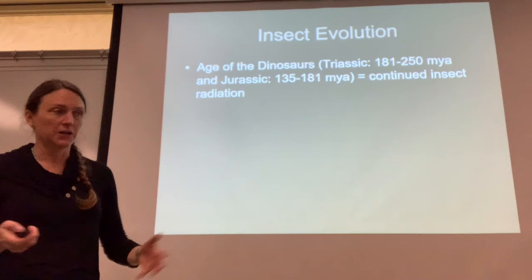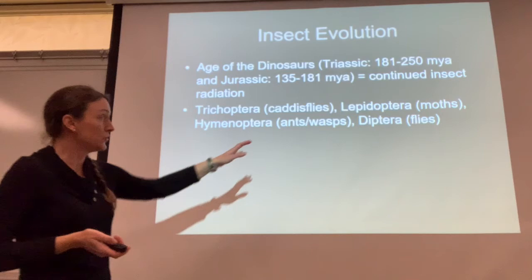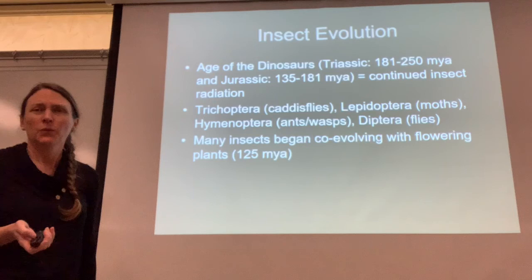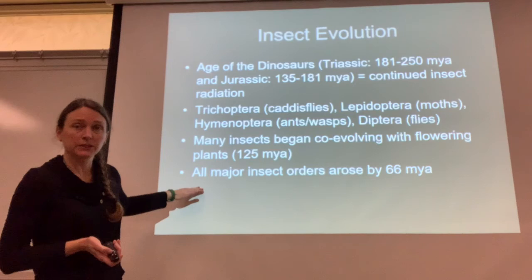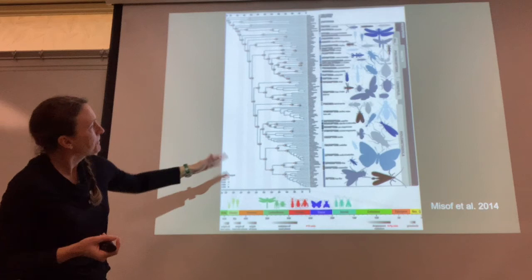Then we hit the age of the dinosaurs in the Triassic, with continued insect radiation — insects just doing their thing and adapting in all of these different geologic time periods. Things like caddisflies, moths, ants, wasps, and true flies all came about around the same time as the dinosaurs. Then we have flowering plants coming on the scene, and a lot of insects began co-evolving with these amazing new resources. By about 66 million years ago, we have all major insect orders on Earth.